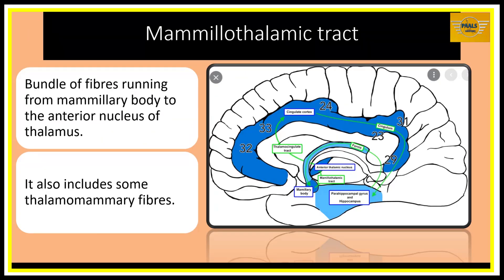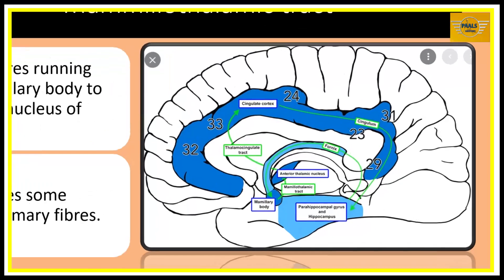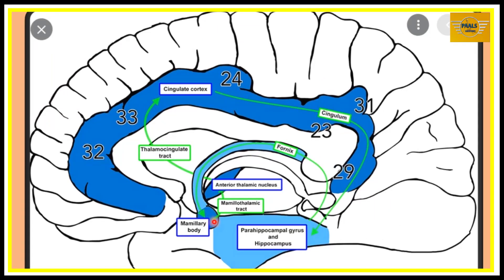For the mammothalamic tract, these are fibers running from the mammillary body in the hypothalamus to the thalamus. In the anterior part of the thalamus the relevant nucleus is called the anterior nucleus of the thalamus. So these fibers running from the mammillary body to the anterior nucleus of the thalamus are called the mammothalamic tract.